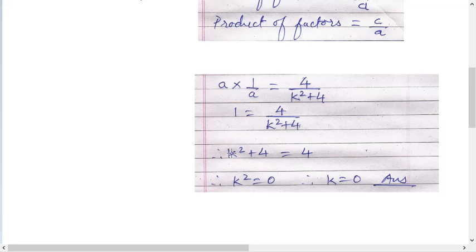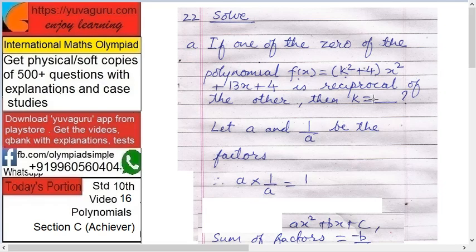Therefore 4/(k² + 4) equals to 1. Take k² + 4 on this side. So k² + 4 equals to 4. k² equals to 0. k equals to 0. That is the required answer. Then k equals to 0. Next.